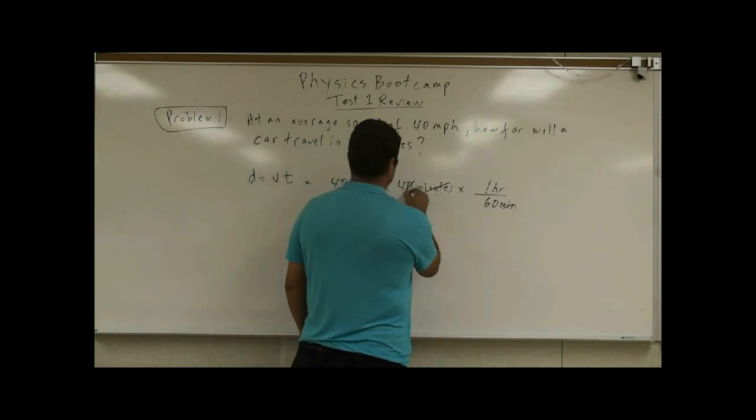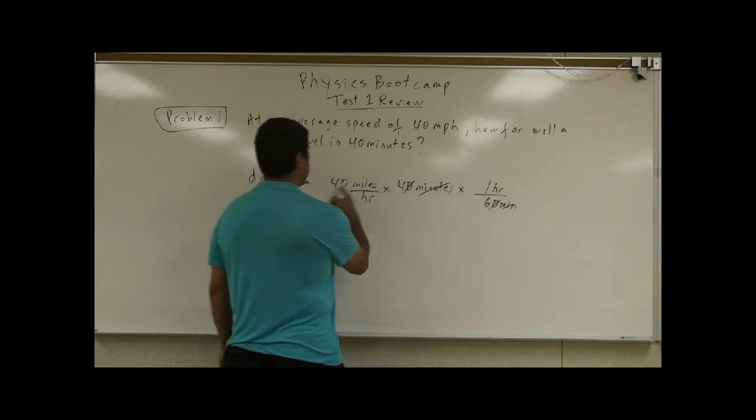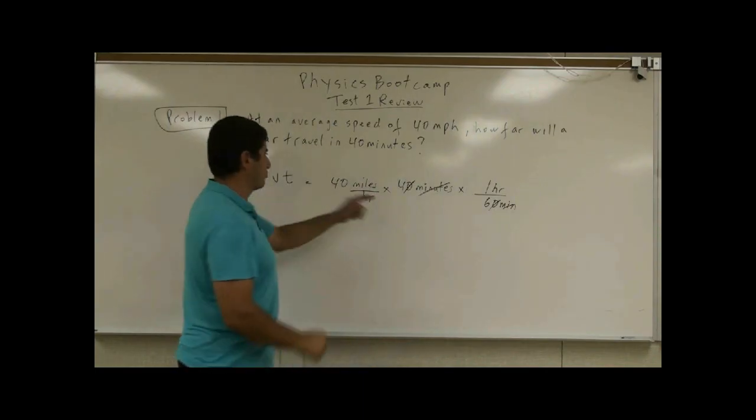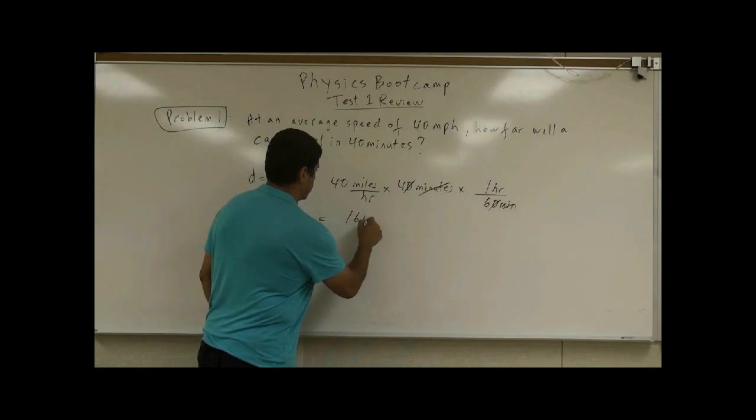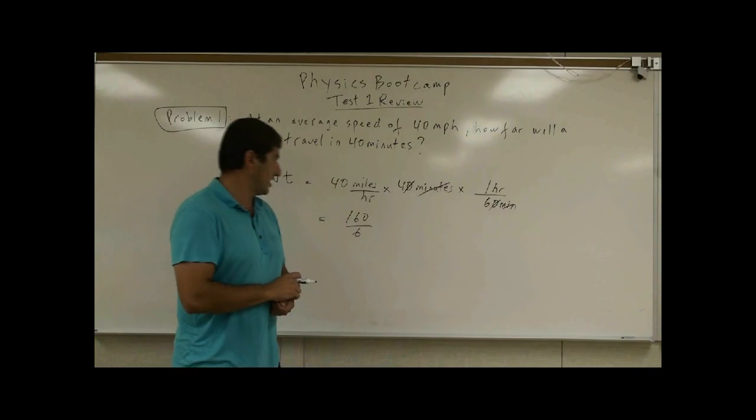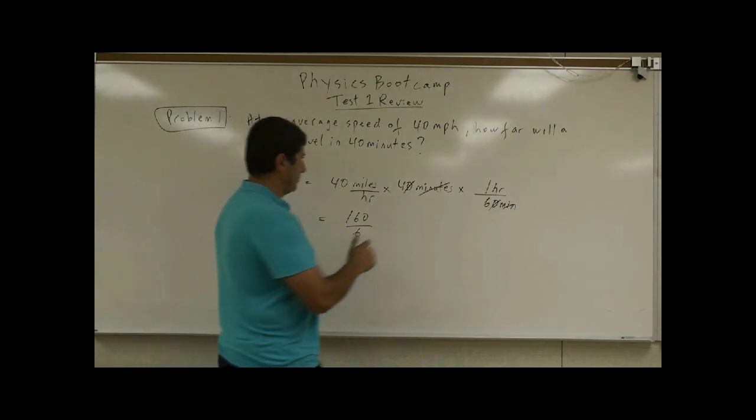What ends up happening: minutes cancels minutes, then you're left with—cancel zero—then you have the product of these two. Four times forty is equal to 160 divided by six.